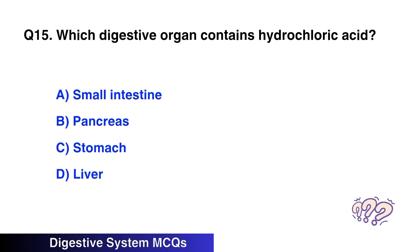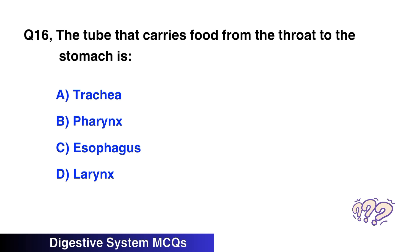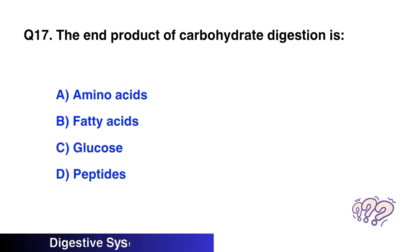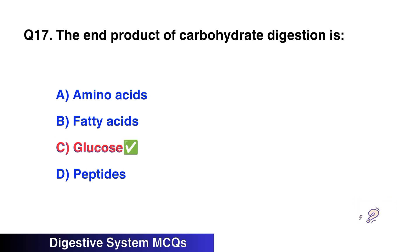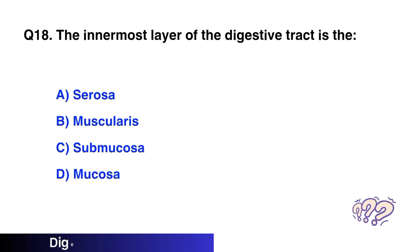Question number fifteen: Which digestive organ contains hydrochloric acid? The right option is C, stomach. Question number sixteen: The tube that carries food from the throat to the stomach is? The right option is C, esophagus. Question number seventeen: The end product of carbohydrate digestion is? The right option is C, glucose.